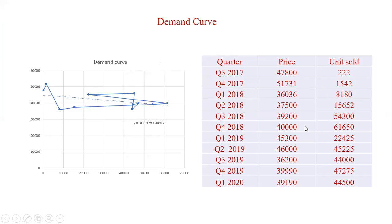In Q4, from Q3 price of $39K to $40K, the quantity jumped to the peak point of 61K. So this is the demand curve, or what we call the demand relation.